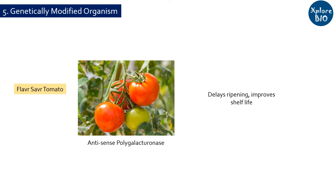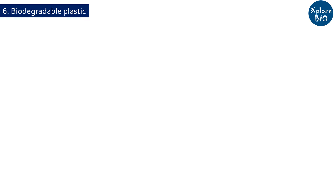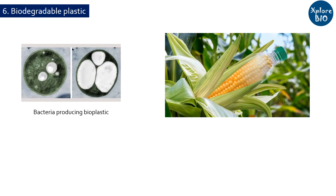Similarly, there are genetically modified corns, soybeans, potato, and mustard showing insect, pest, or herbicide tolerance, and other desirable characters. As plastics are non-biodegradable and not good for the environment, transgenic plants and bacteria can be exploited to produce biopolymers like polyhydroxyalkanoates and polyhydroxybutyrates that can replace plastics.